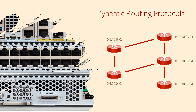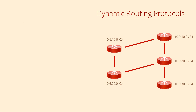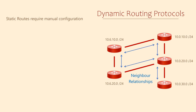But the approach they take is very different. When we configure a static route we do two things: we tell the router about a remote network and we tell it how to get there. This is a manual process which can be a pain when you have a lot of routes. Dynamic routing protocols have a different approach — routers running one of these protocols will find other connected routers. We call these neighbours or peers.